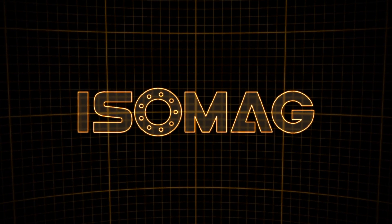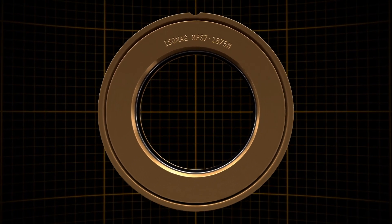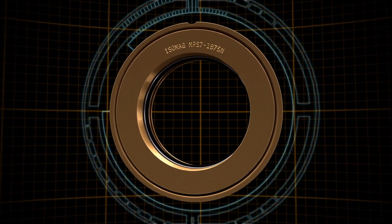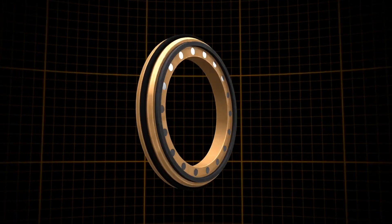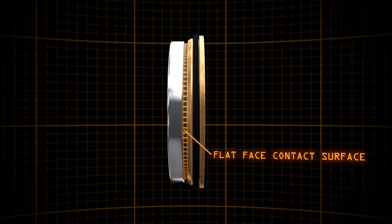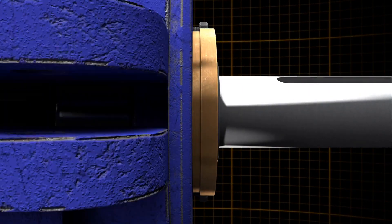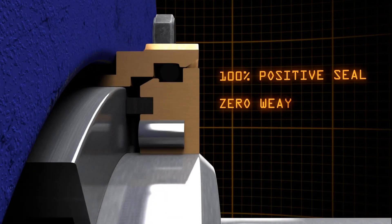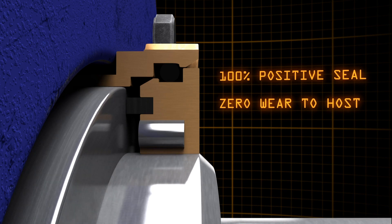Enter Isomag. Our seals closed the leak path inherent to labyrinth seals by incorporating a magnetically energized flat face contact surface, creating a positive internal seal without wearing the host equipment.